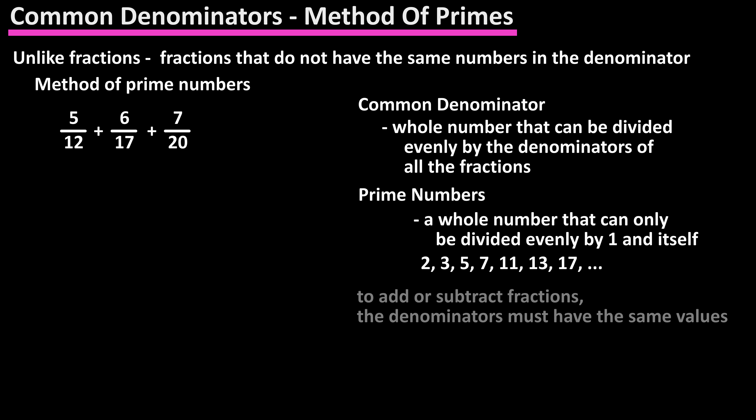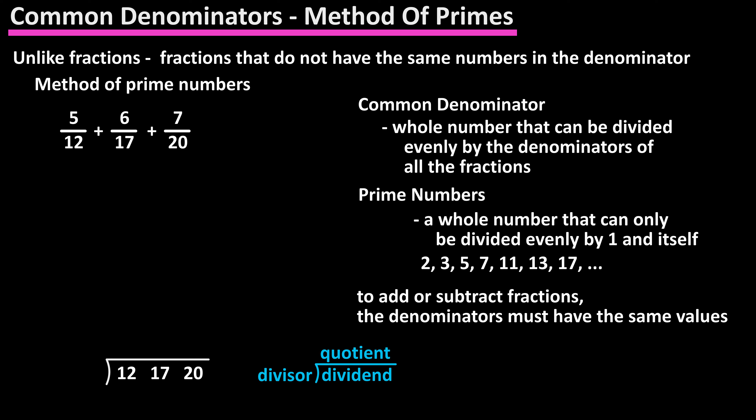In order to add these fractions, we need to convert the fractions into like fractions — that is, fractions that have the same number in the denominators. To use the method of prime numbers, we first write the three denominators, 12, 17, and 20, as dividends. We are going to start with the smallest prime number of 2, and see if any of the numbers are evenly divisible by 2.